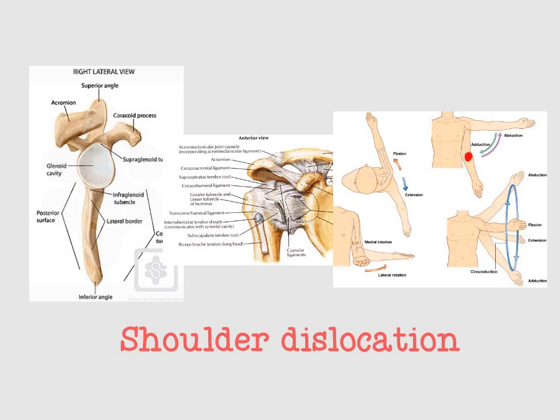The third underlying risk factor is extraordinary motion around the shoulder joint. The shoulder joint has a wide range of movement, and extraordinary motion will cause stress on the upper limb and shoulder joint dislocation in many cases.